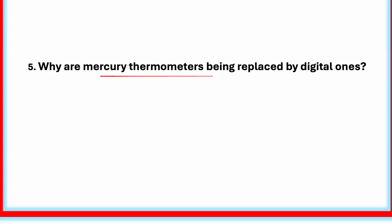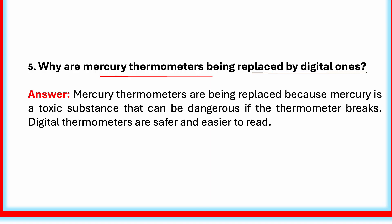Why are mercury thermometers being replaced by digital ones? Mercury thermometers are being replaced because mercury is a toxic substance that can be dangerous if the thermometer breaks. Earlier people used mercury thermometers to measure temperature. Mercury is a shiny liquid metal, but it is very poisonous. If the thermometer breaks, it is dangerous and very hard to clean up. Digital thermometers are safer and easier to read. They use heat sensors to find the temperature and display numbers clearly on a screen.